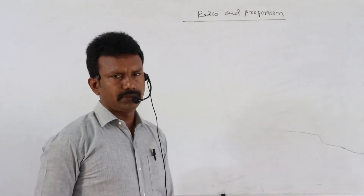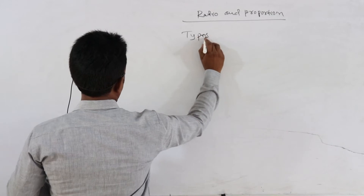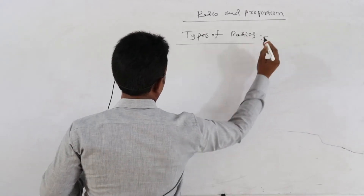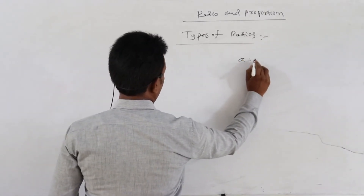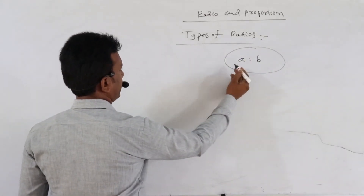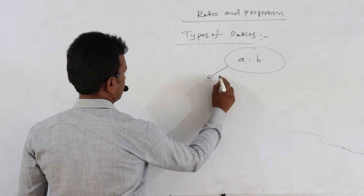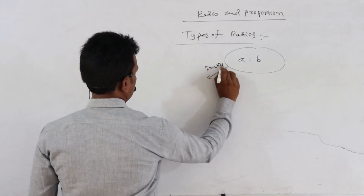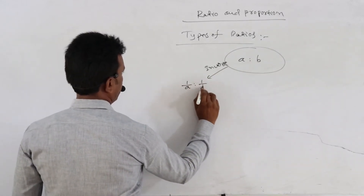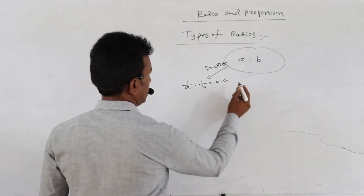Now, types of ratios. Suppose a is to b is a given ratio. We define five different types of ratios for a given ratio a is to b. The first one is the inverse ratio, defined as 1 by a and 1 by b, or simply b is to a.